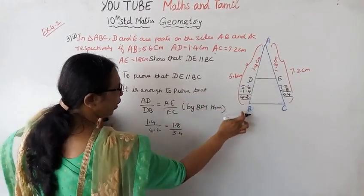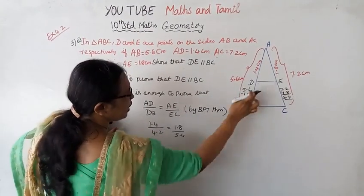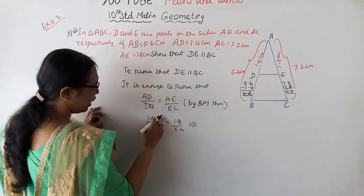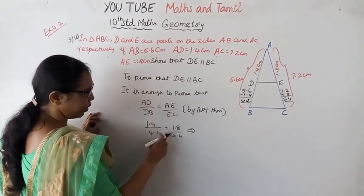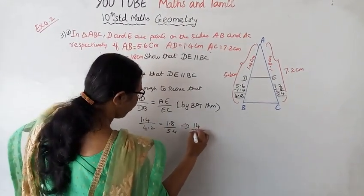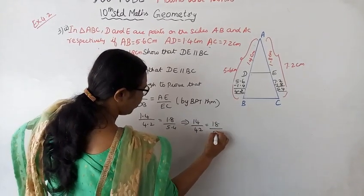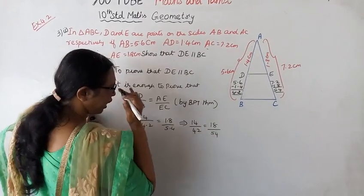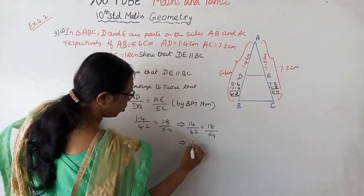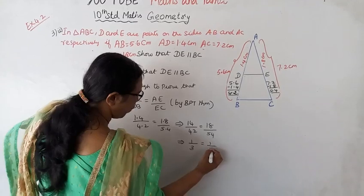AD value is 1.4, DB value is 4.2, AE value is 1.8, EC value is 5.4. To remove the decimal point, multiply both numerator and denominator by 10. This gives us 14 by 42 equals 18 by 54. Now cancel: 14 divided by 3 gives 42, so we get 1 by 3.